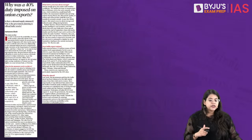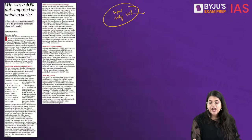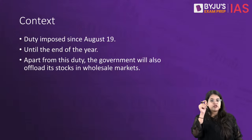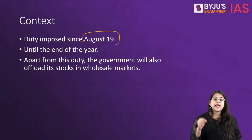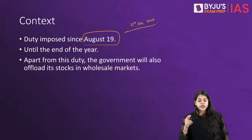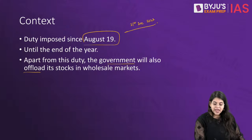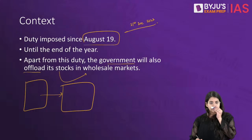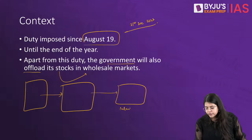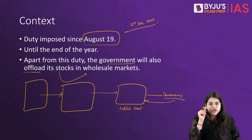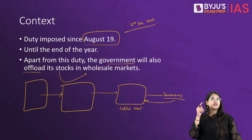We now move to the third article: a 40% export duty that has been imposed on onion exports from India, effective from August 19 to December 31, 2023. Apart from imposing this duty, the government has also declared it will offload its stocks in the wholesale market so that retail prices for consumers can be controlled and inflation in onion prices is kept in check.